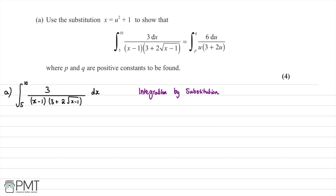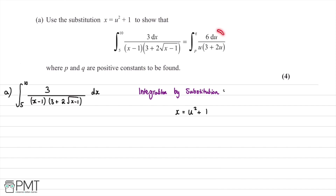We want to do integration by substitution. We'll rearrange for u and then differentiate, which gives us an expression in terms of dx that we can substitute back into our original expression. Then we'll aim to replace the x terms with u to get into the form we're after.